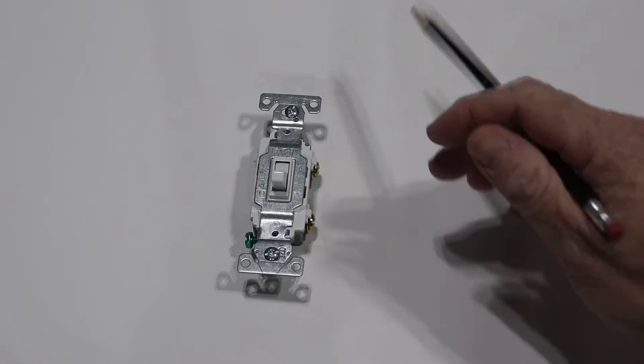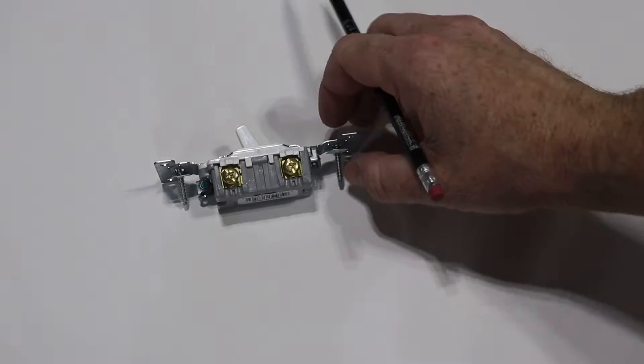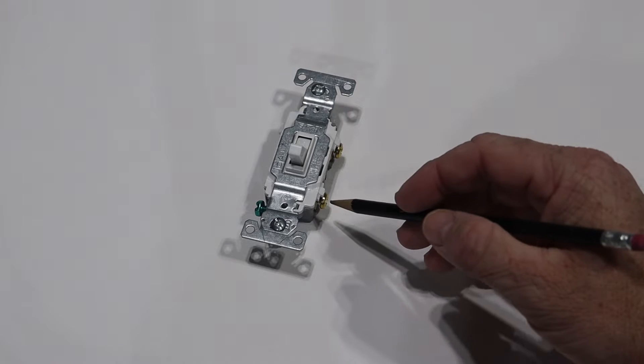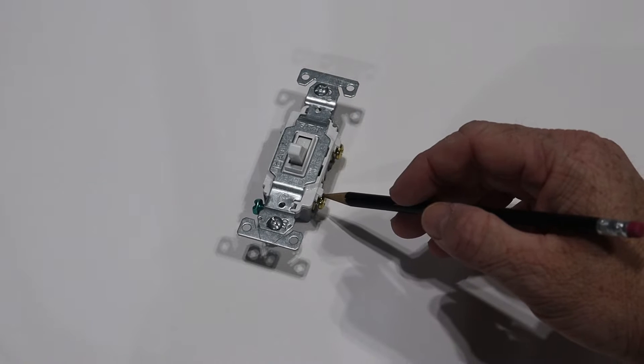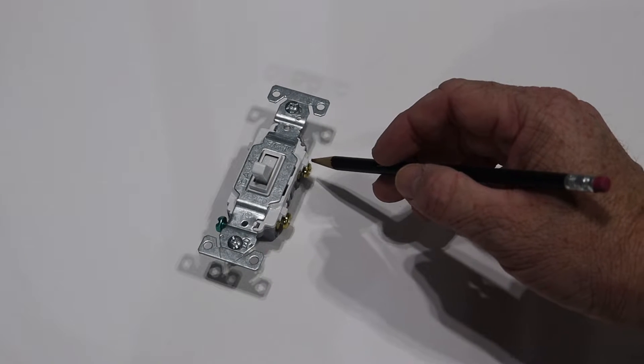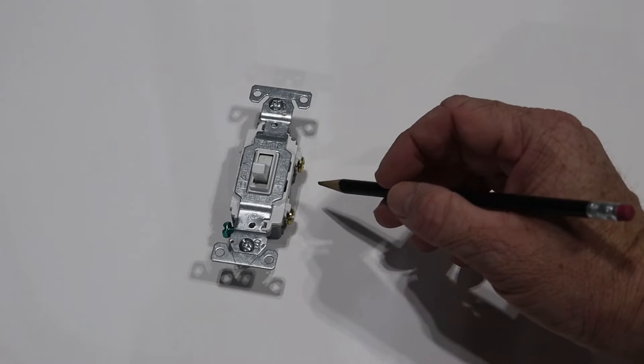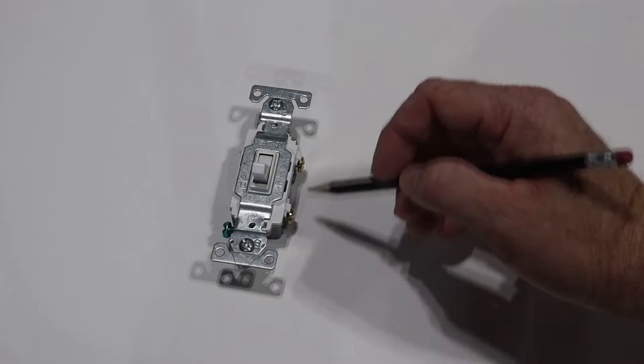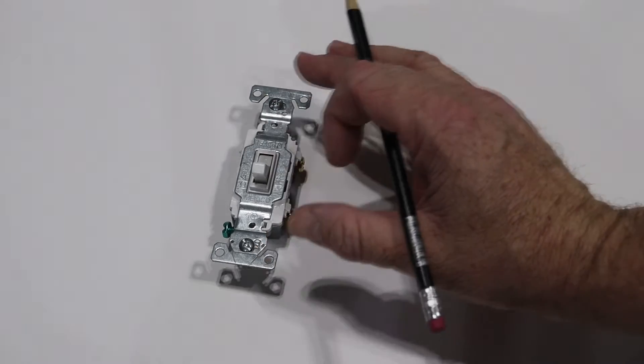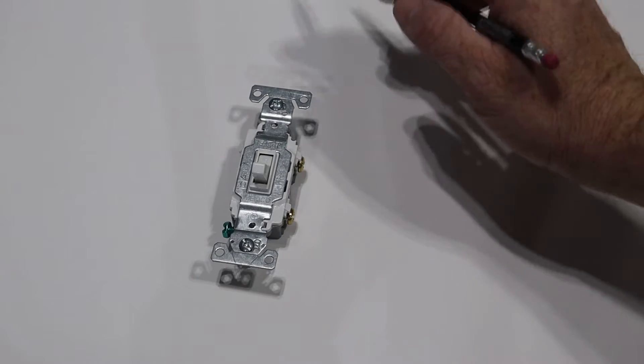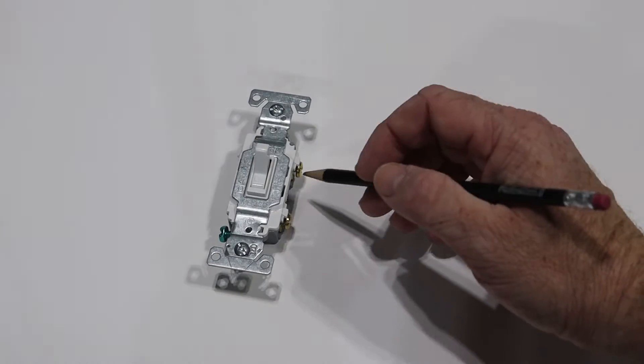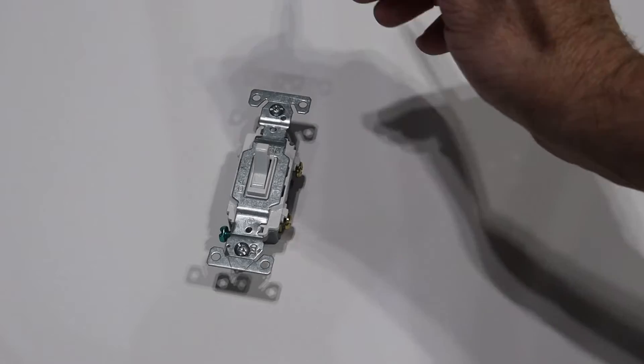So on a typical single pole switch all you have is a couple screws here and your one black wire will hook up to one screw and the other black wire will hook up to another screw and what that's done is create a break in the circuit. So when the switch is off power doesn't reach the light. When the switch is on power reaches the light.